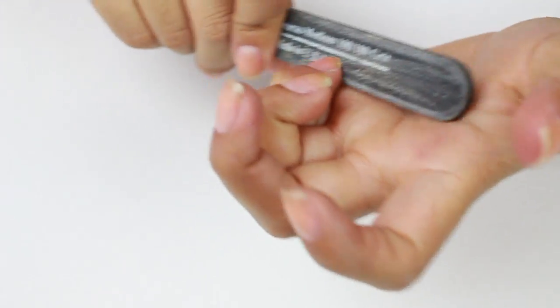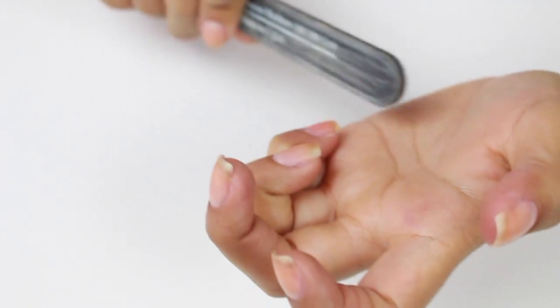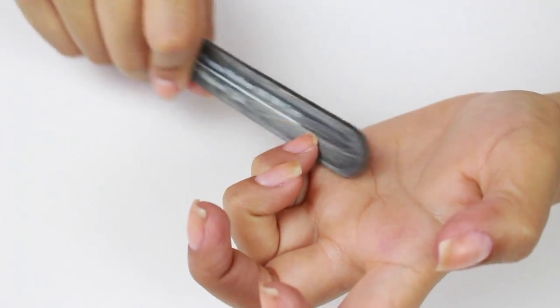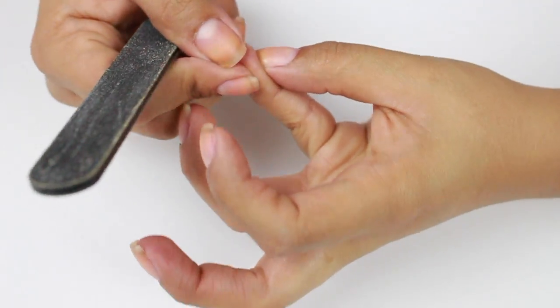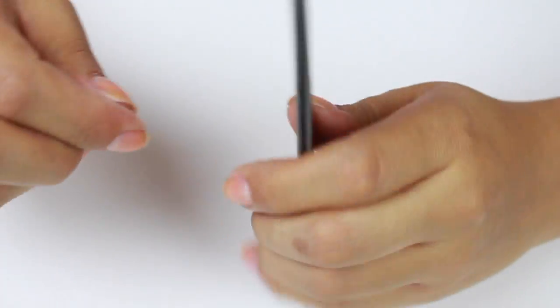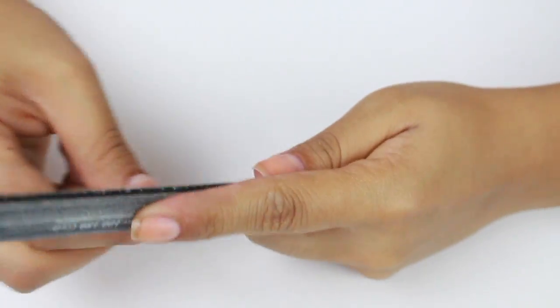A tip is to file in one direction because it does prevent chipping of the nail or splitting. I found that I can kind of go up and down both ways and it doesn't really affect it too much, but I just avoid doing that and go one way for the most part.